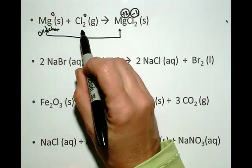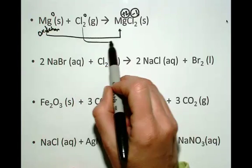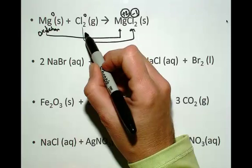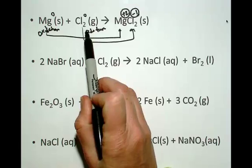The chlorine is undergoing reduction because it's gaining electrons from a zero to a minus one oxidation number. Therefore, magnesium is the reducing agent and chlorine is the oxidizing agent.